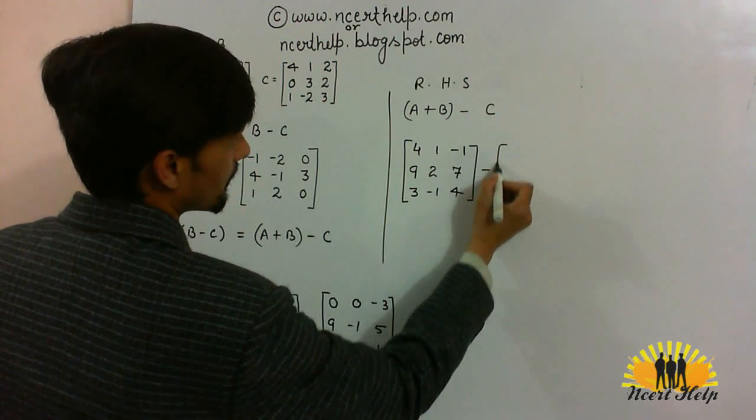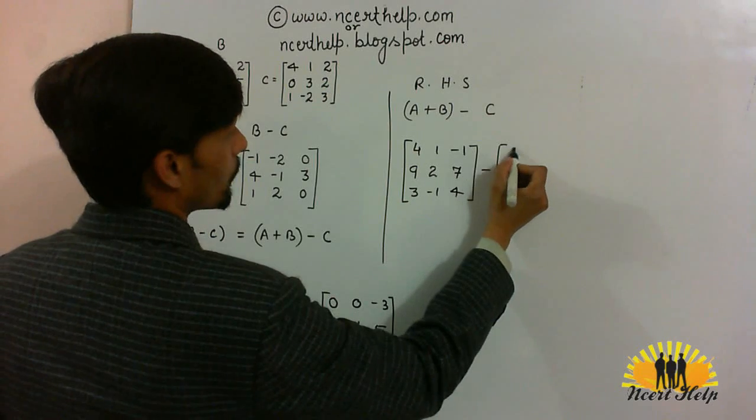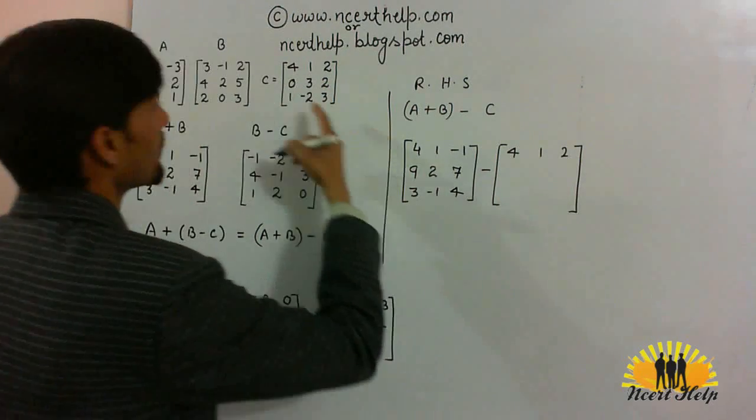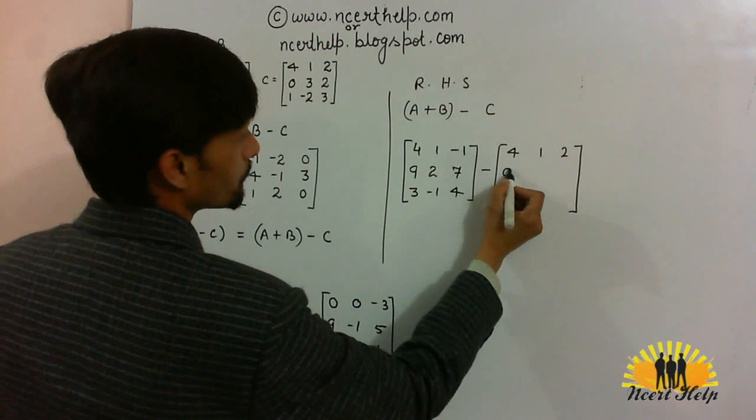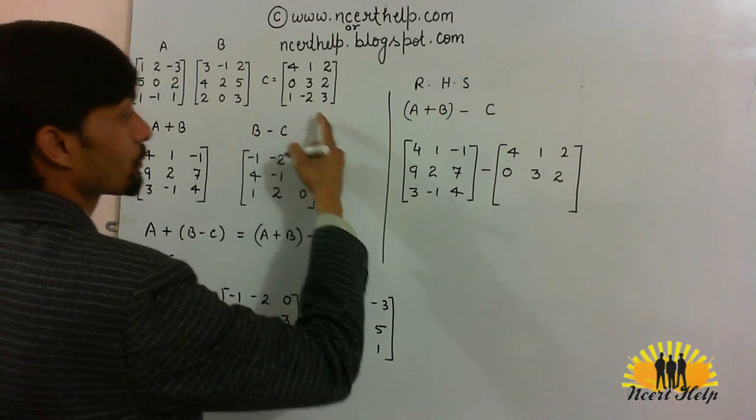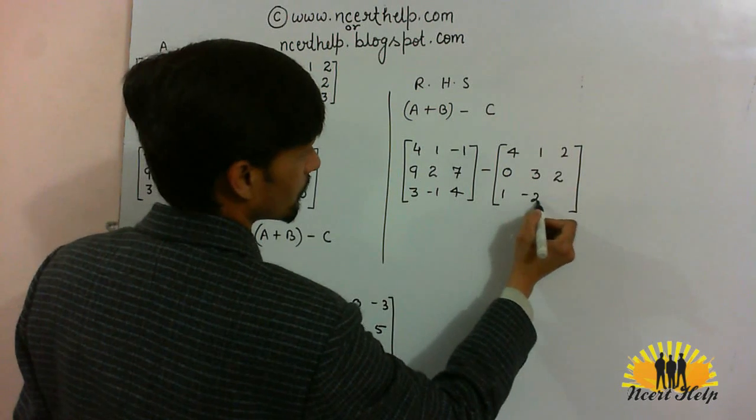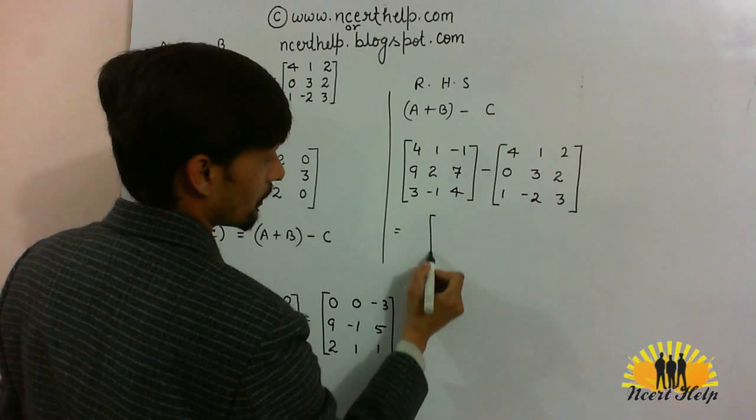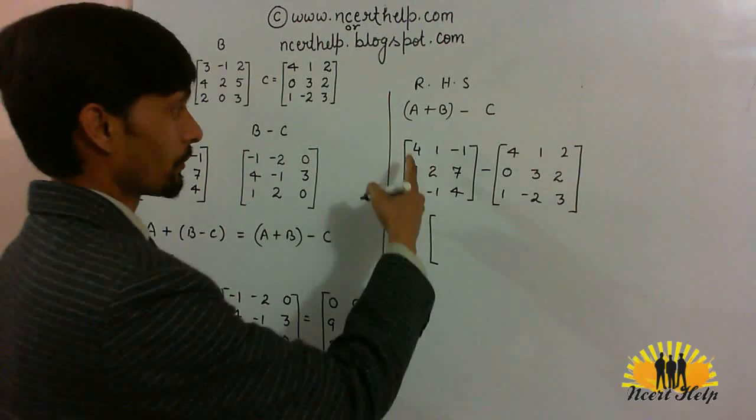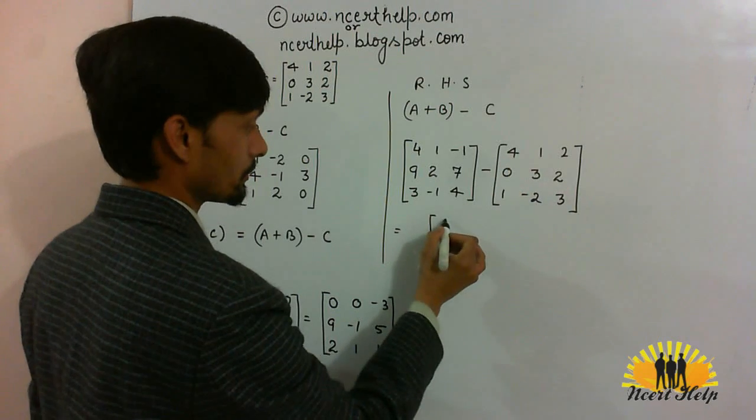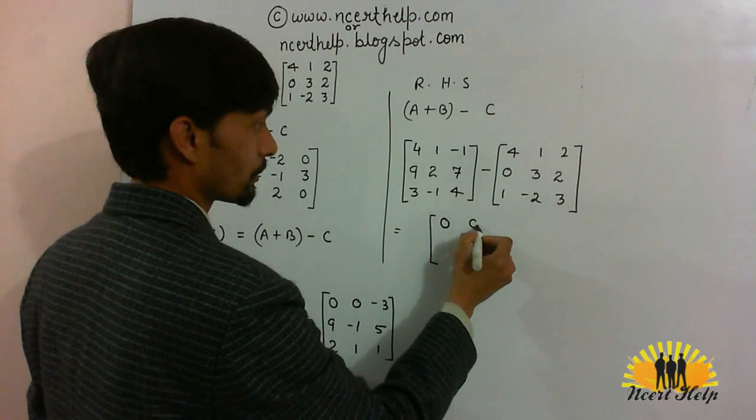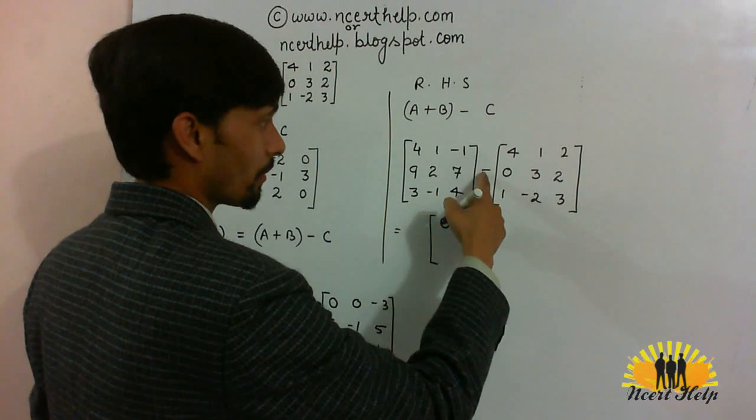Minus matrix C. Here it is 4, 1, 2, 0, 3, 2, 1 minus 2, 3. Now, subtract these two matrices, we will get 4 minus 4, 0. 1 minus 1, 0. Minus 1 minus 2, minus 3.